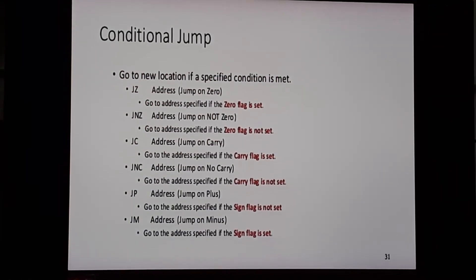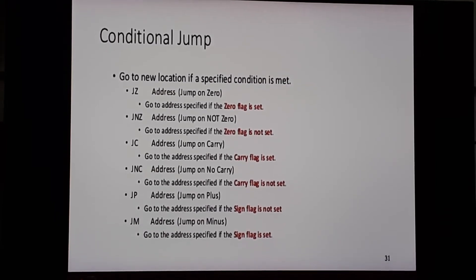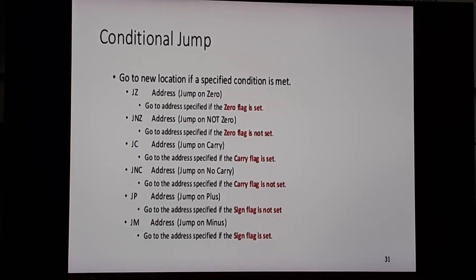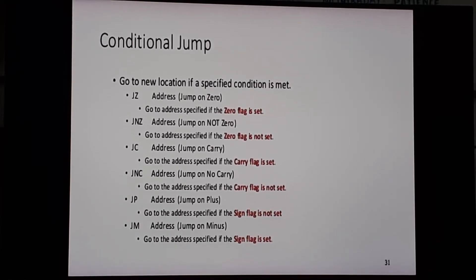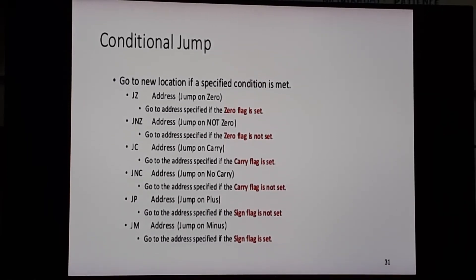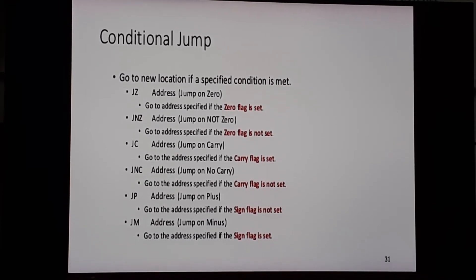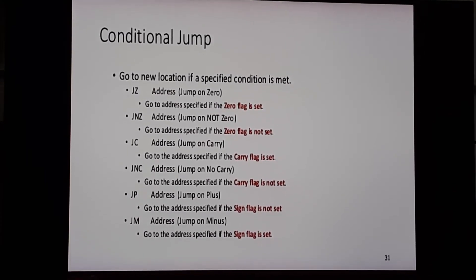The conditions for conditional jump are shown in the next slide. The first condition is JZ address — jump on zero. This instruction will jump only if the zero flag is set to 1, meaning if there is a zero. So JZ stands for jump if zero. The second condition is JNZ address — jump on not zero. This instruction will take a jump only if the zero flag is reset, or if the zero flag is not set.